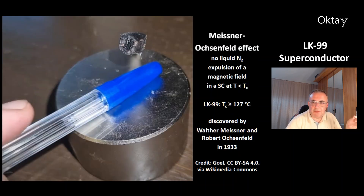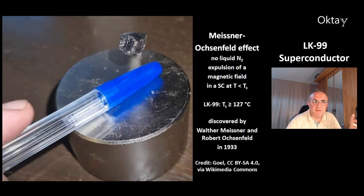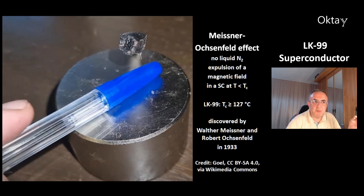This is another picture showing the Meissner-Ochsenfeld effect of LK99. What is special about this picture is that no liquid nitrogen is involved — you don't need it anymore. The Meissner-Ochsenfeld effect is the expulsion of a magnetic field in a superconductor once it reaches a temperature below the critical temperature, which for LK99 is 127 degrees Celsius. This effect was discovered by Walter Meissner and Robert Ochsenfeld in 1933.